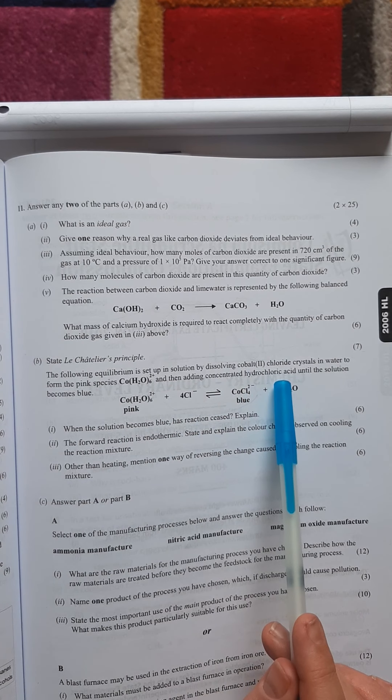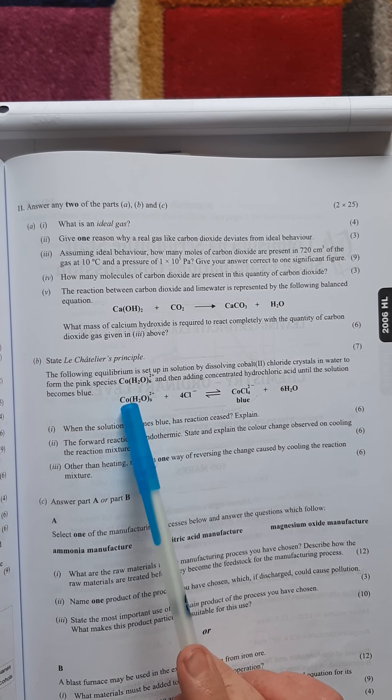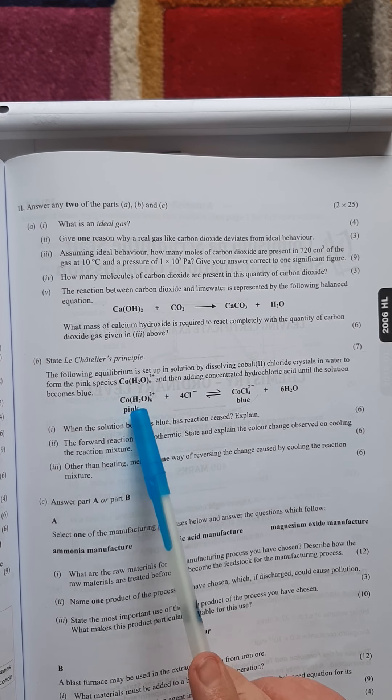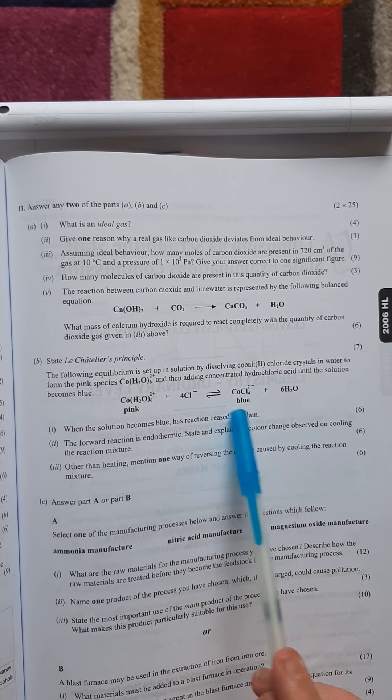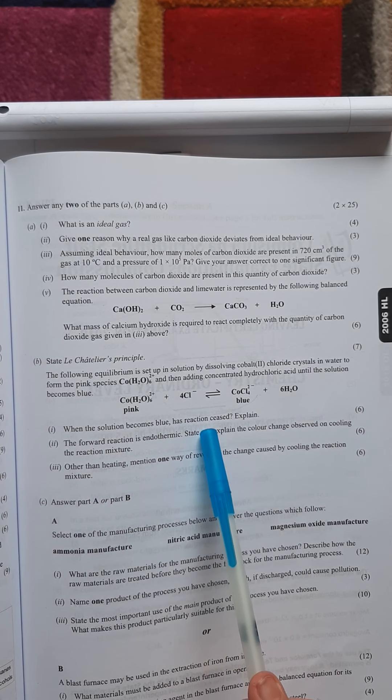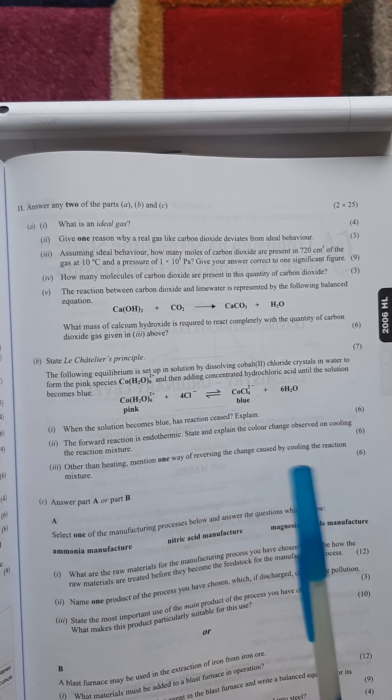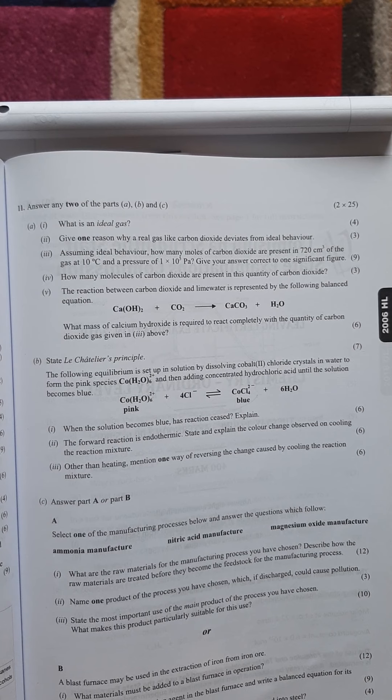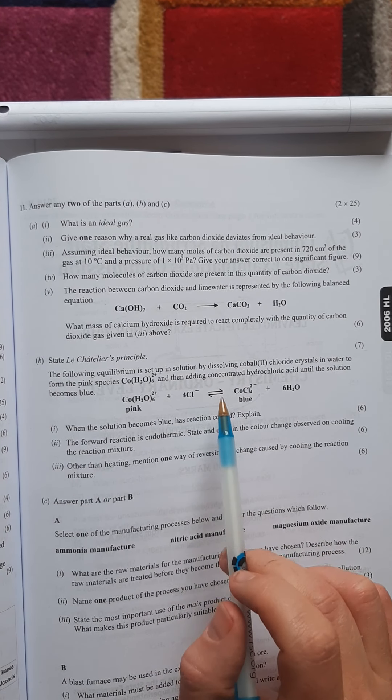The following equilibrium is set up in solution by dissolving cobalt(II) chloride crystals in water to form the pink species cobalt six waters, and then adding concentrated hydrochloric acid until the solution becomes blue. When the solution becomes blue, has the reaction ceased?